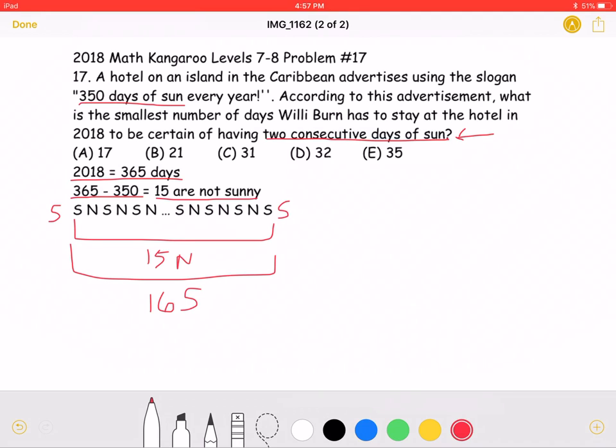in order to have a total of two consecutive days of sun. This means that he must stay 15 plus 16 plus 1 or a total of 32 days at this hotel in order to make sure he will have two consecutive days of sun. This means that answer choice D, 32 must be correct.